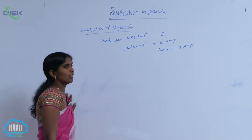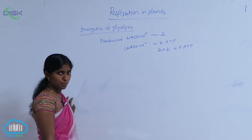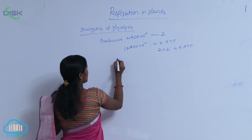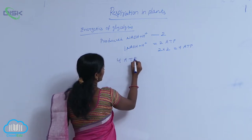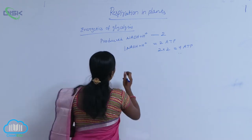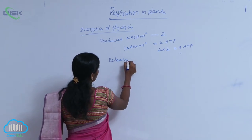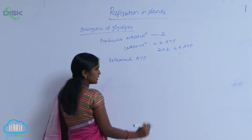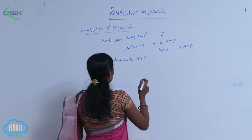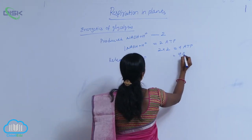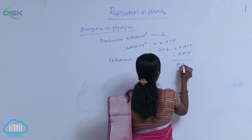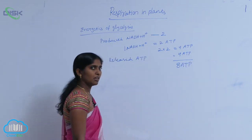How many ATPs are released from substrate-level phosphorylation? Two plus two ATPs — four ATPs are released. So the total ATPs released during glycolysis, when one molecule of glucose is partially oxidized, results in four ATPs from substrate-level phosphorylation. Combined with the four from NADH₂, eight ATPs are released in total.